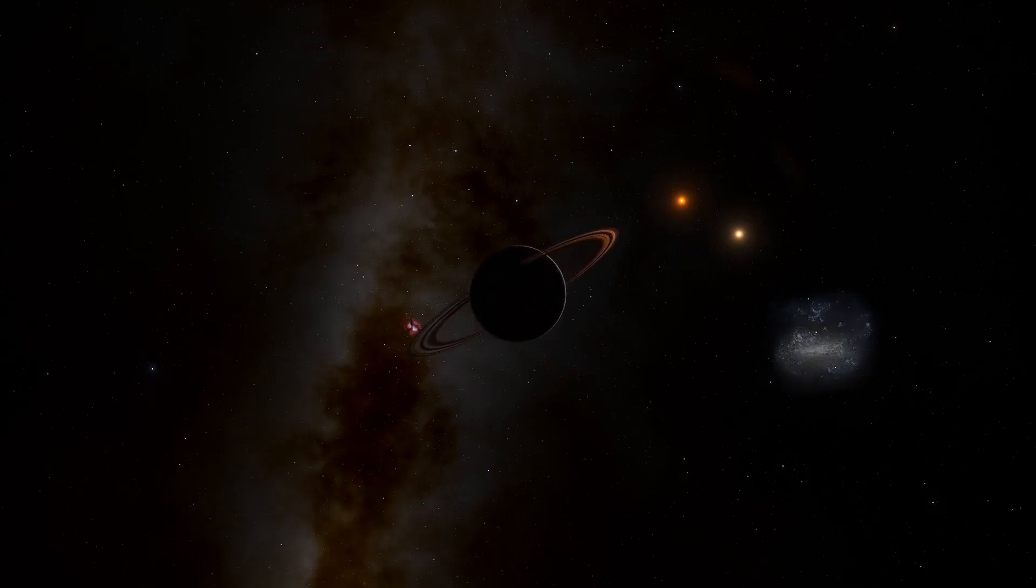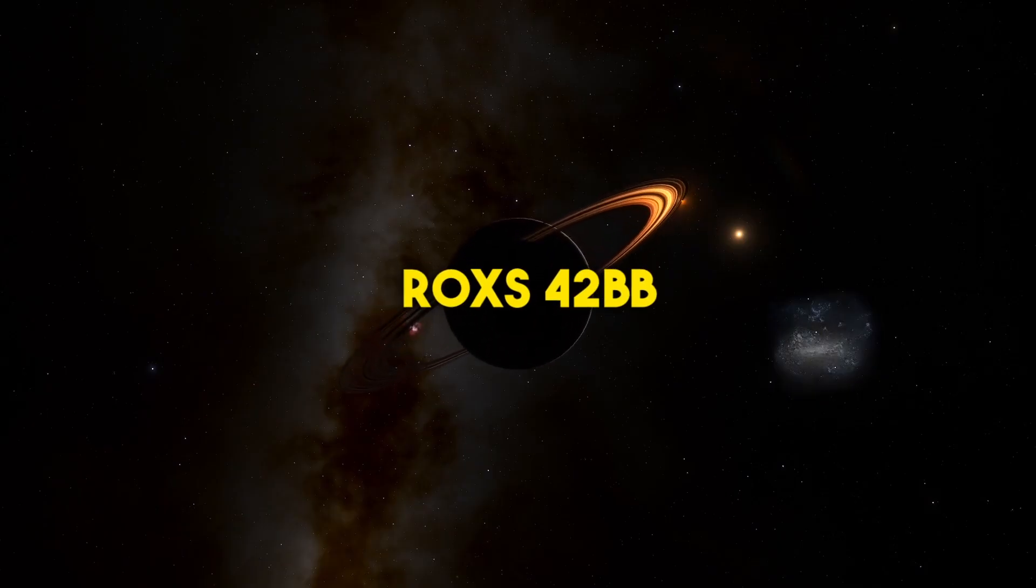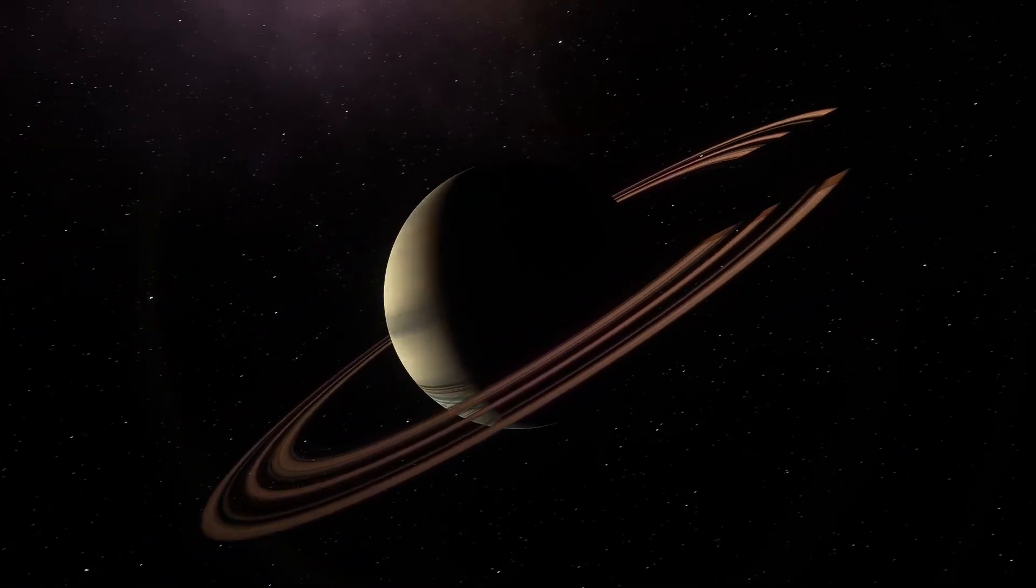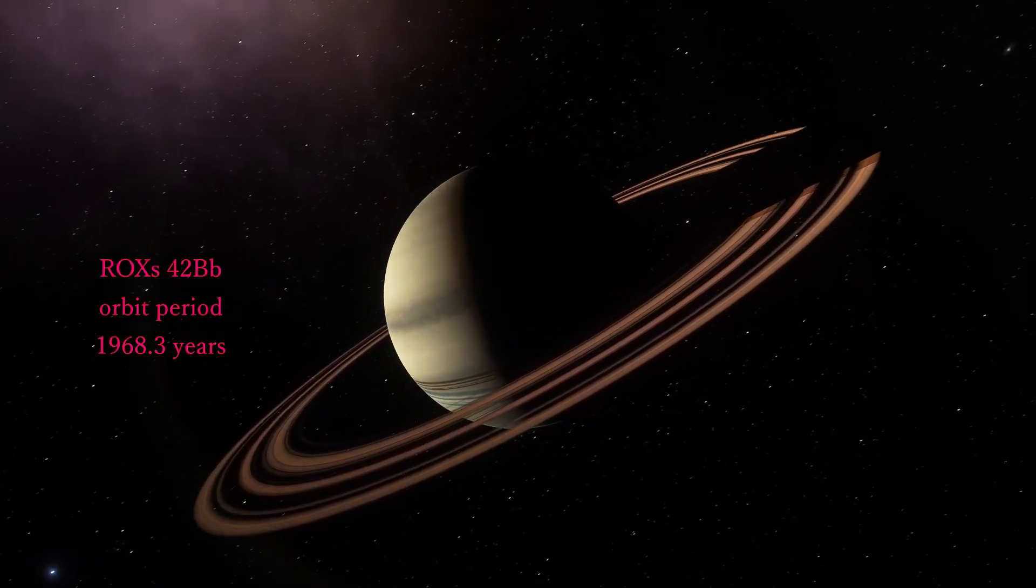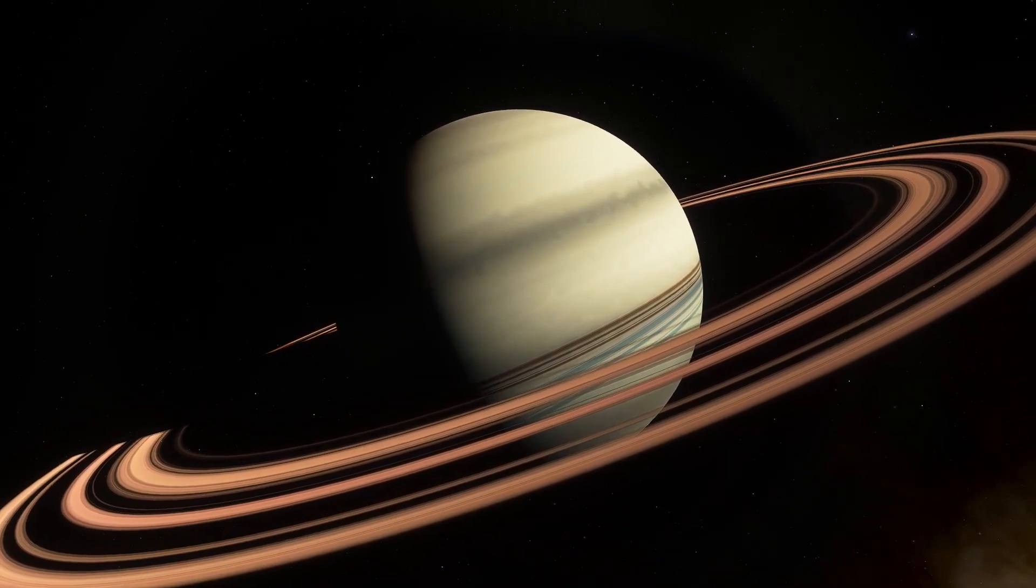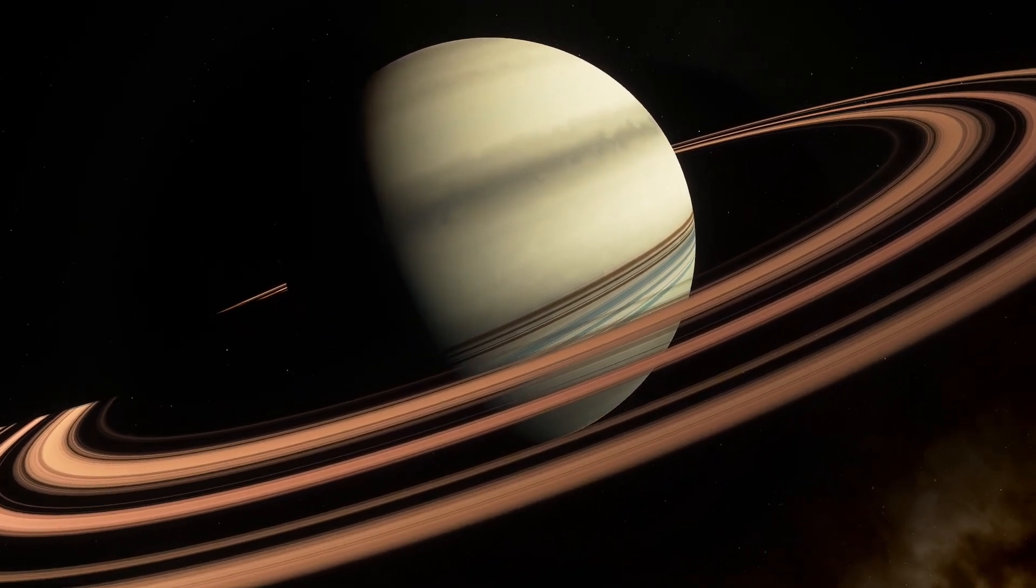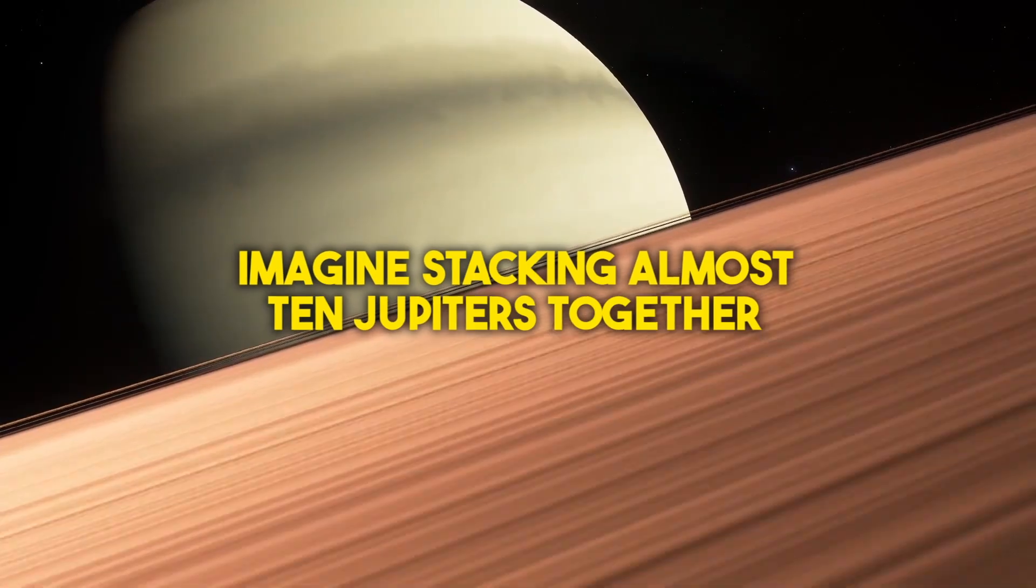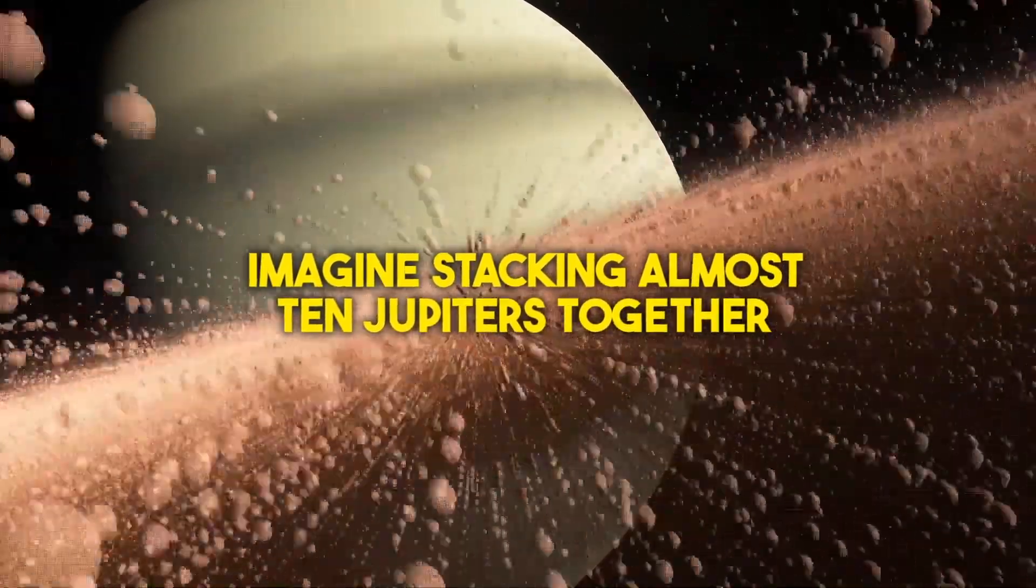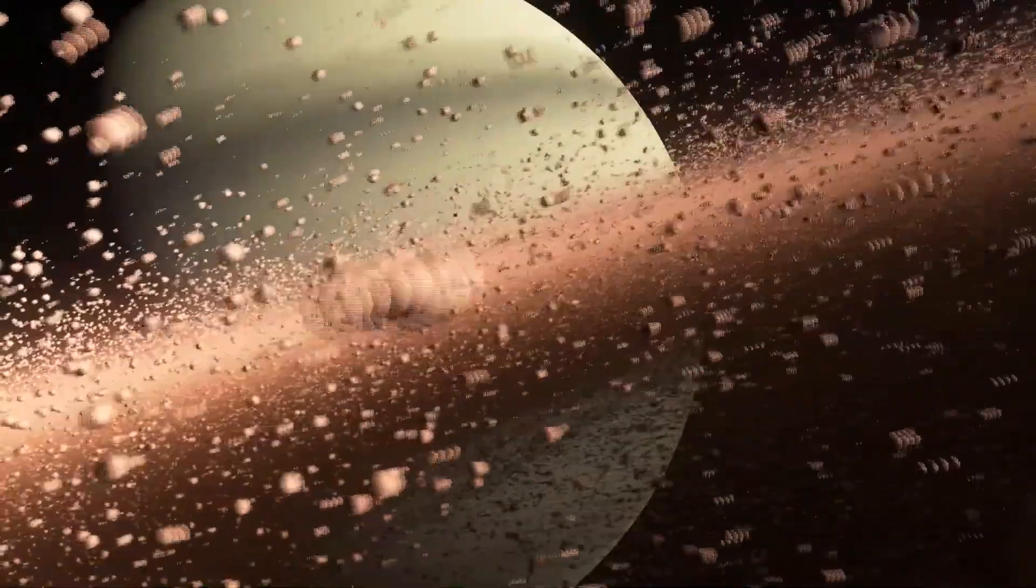One of the largest known planets is ROXs 42Bb, a gas giant orbiting a star about 460 light-years from Earth. This behemoth is around 9 times the mass of Jupiter and boasts a radius about 2.5 times that of Jupiter. Imagine stacking almost 10 Jupiters together. That's ROXs 42Bb for you.